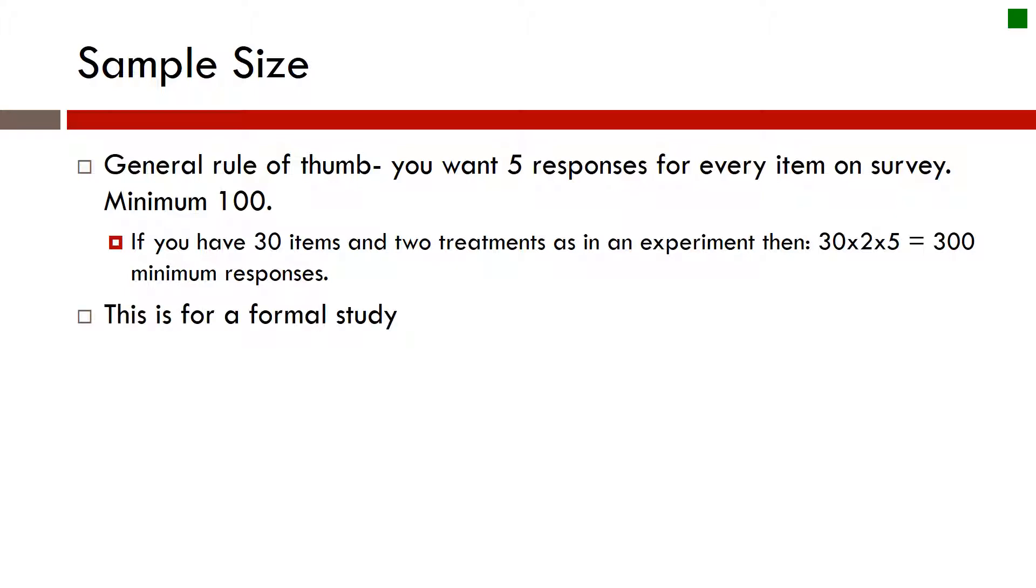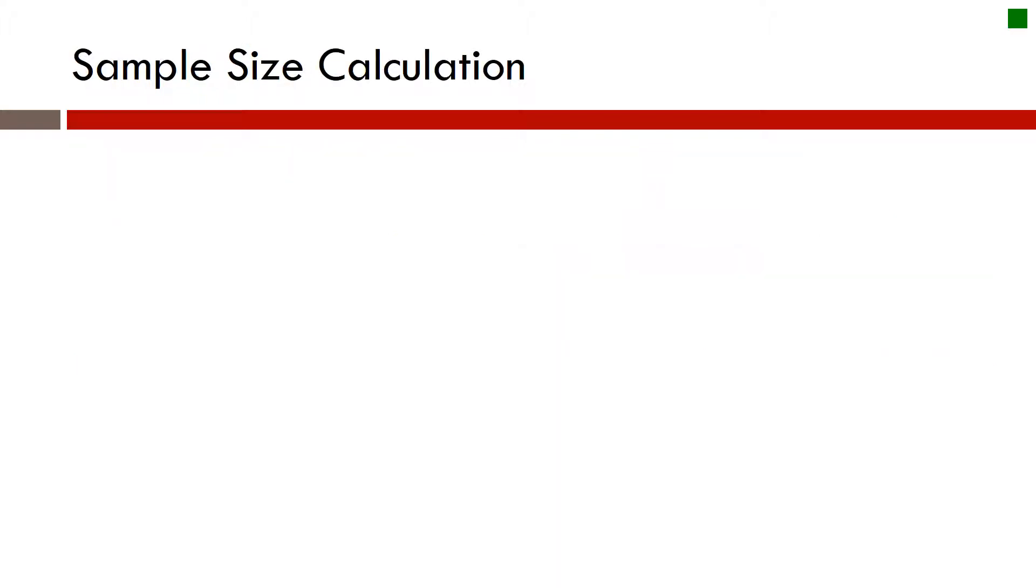There are times when you may do a pilot study or something with limited data. This would be for a full-on study that would give you all the power that you would need. This does not include things like pre-testing. This would be your final data set that you would want to use. So the rule of five, five responses for every item. That would be a good thing to remember.